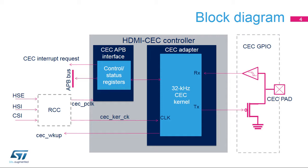It consists of a CEC adapter and a CEC Advanced Peripheral Bus, or APB, interface. The CEC adapter provides functions such as frame decoding and checking, while the CEC APB interface manages the control and status registers, data in-registers and data out-registers, and synchronous interrupt requests.